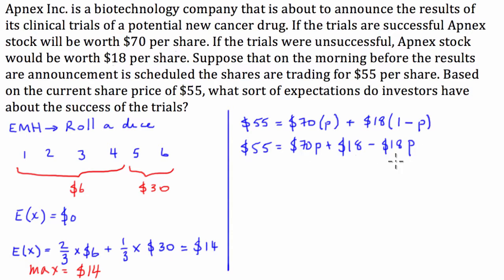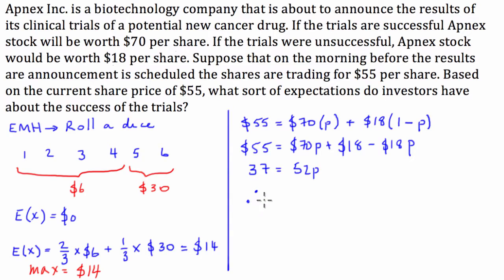Combining like terms and moving the 18 to the other side, we get 37 = 52P. So P equals 37/52, which equals approximately 0.712.